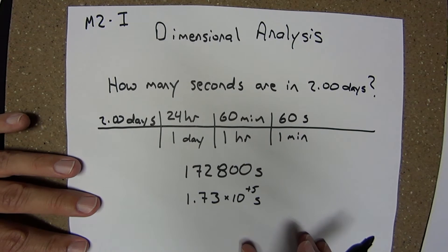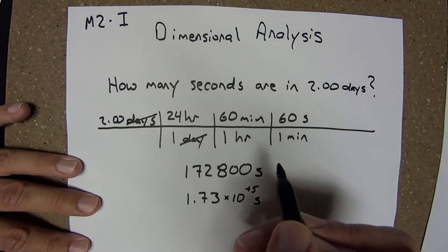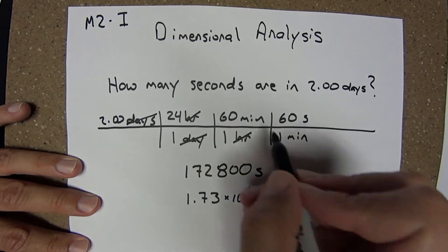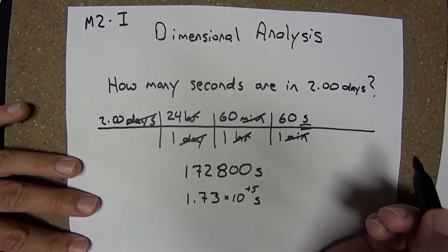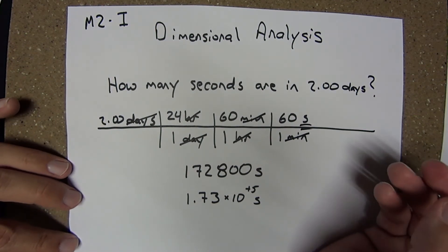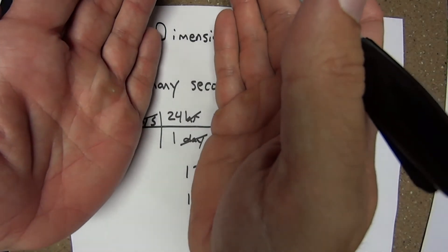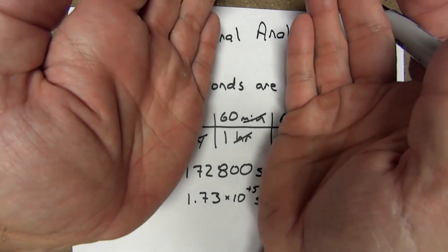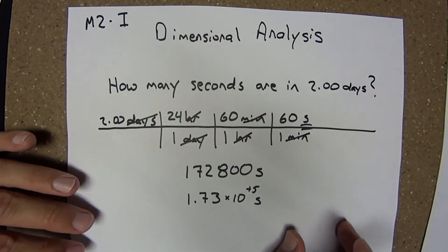Also notice that I have a check that my units have indeed canceled. Days canceled days. Hours canceled hours. Minutes canceled minutes. Indeed, I'm left with seconds. Also, the system allows me to conveniently go back and check my conversion factors. One day is indeed 24 hours. One hour is indeed 60 minutes. One minute is indeed 60 seconds.